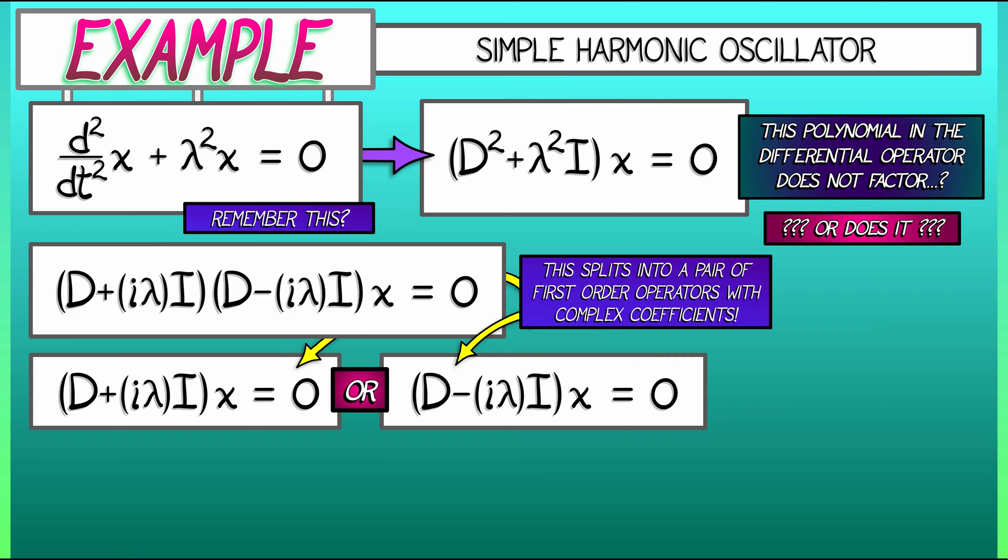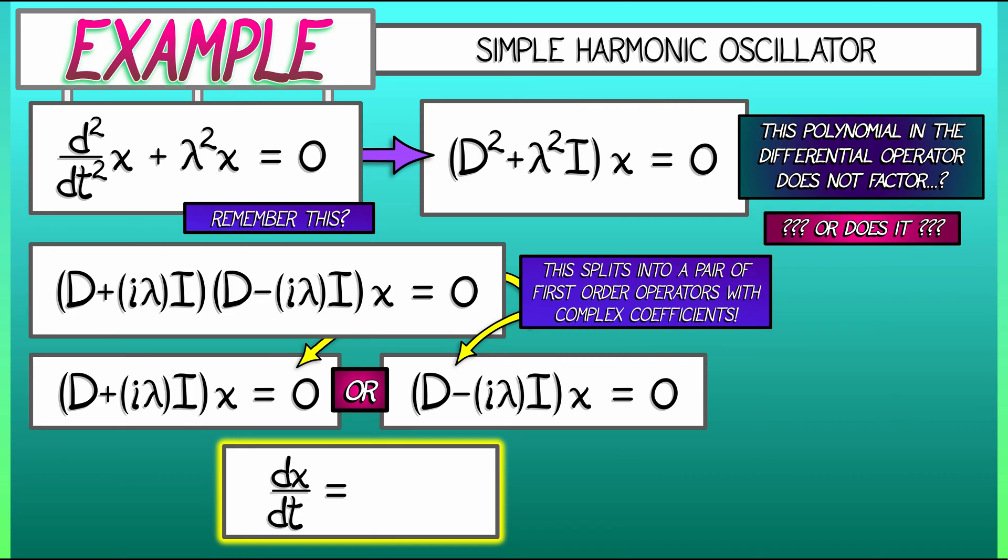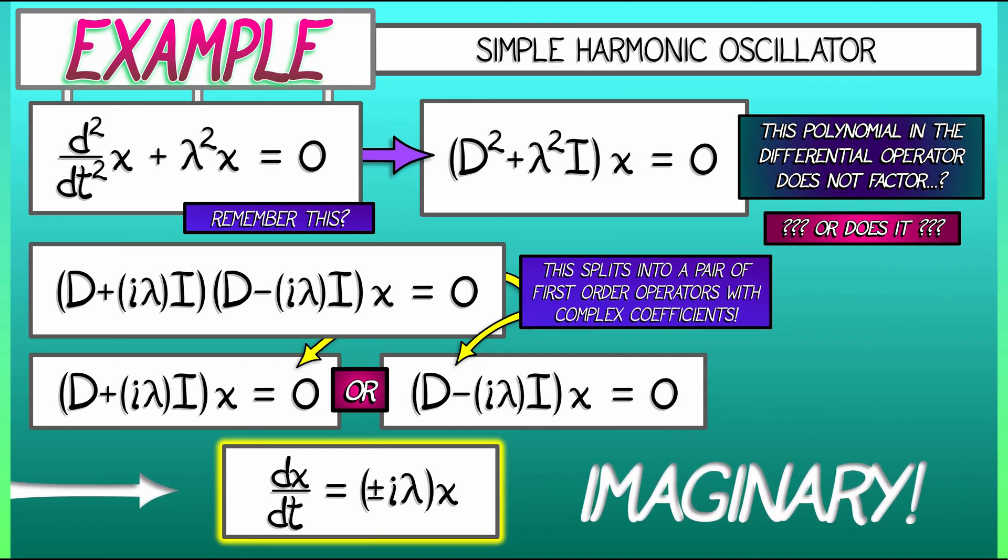What is that first-order linear differential equation? It is of the form dx dt equals plus or minus i lambda times x. This is just the same simple linear first-order equation that we all know and love, dx dt equals a constant times x. But now the constants are imaginary. It's plus or minus i times lambda. Can we solve that? Oh, sure. Sure we can solve that.